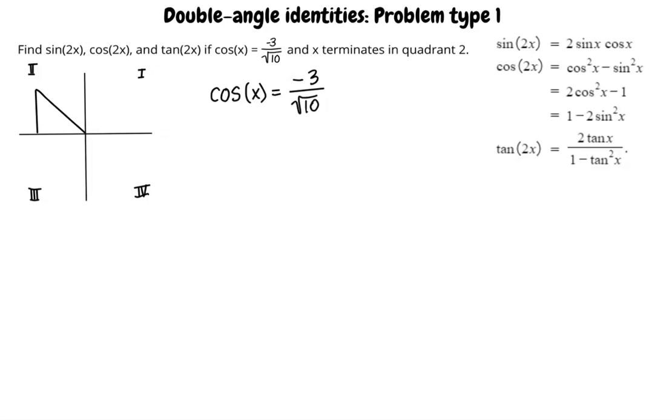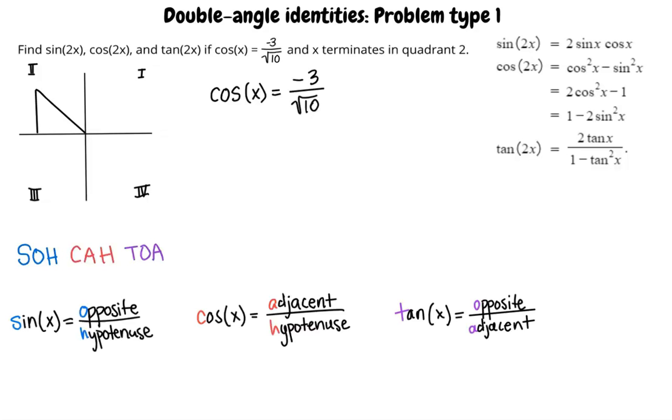We are given that cosine of x equals negative 3 over square root of 10. We can use this to begin labeling each side of the triangle. An easy way to remember how trigonometric functions relate to triangles is by the acronym SOH CAH TOA. Sine equals opposite over hypotenuse. Cosine equals adjacent over hypotenuse. And tangent equals opposite over adjacent.